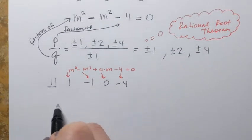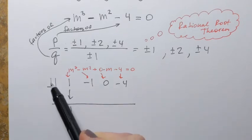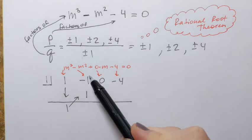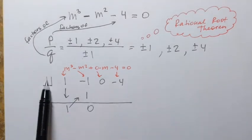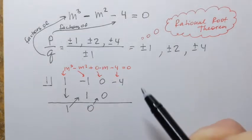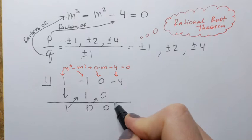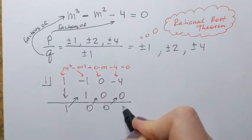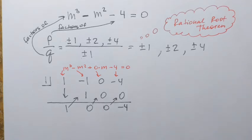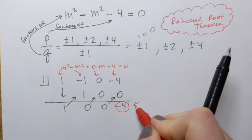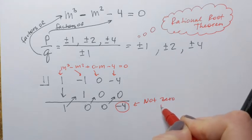Let me remind you how we perform synthetic division. I put a line and bring down the first number. Then I take 1 and multiply by this number: 1 times 1 is 1. Record the result, then add: negative 1 plus 1 gives 0. Then 1 times 0 is 0; add to get 0. Then 1 times 0 is 0; add to get negative 4. This last number is the remainder. We obtain a solution only if the remainder is 0, but in this case it's not 0.